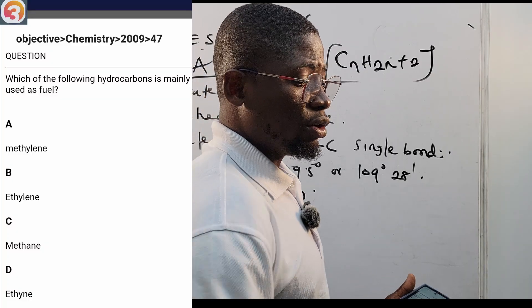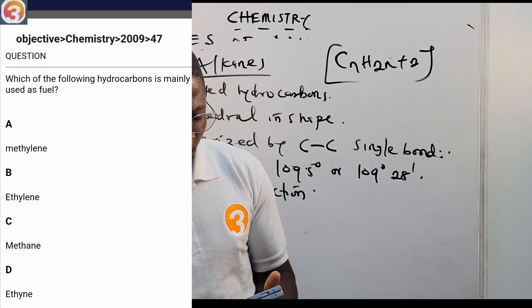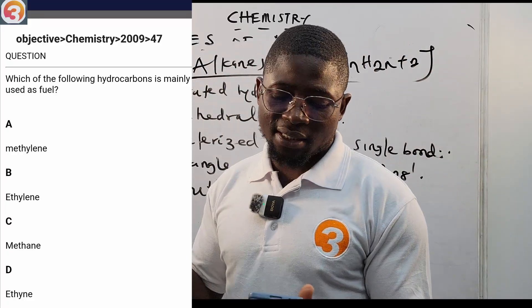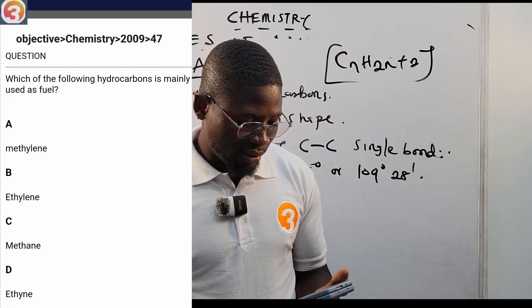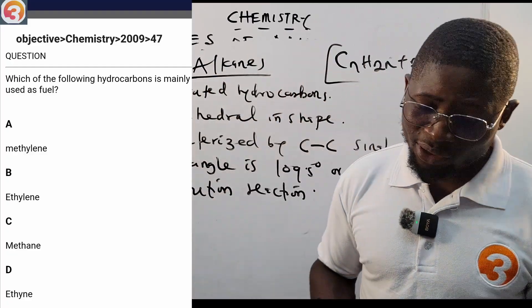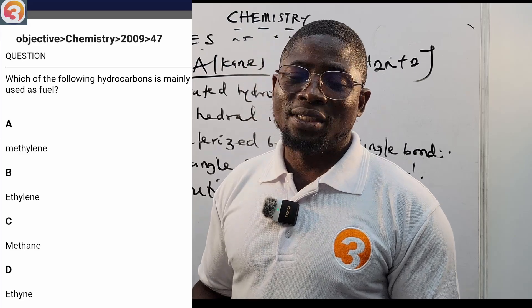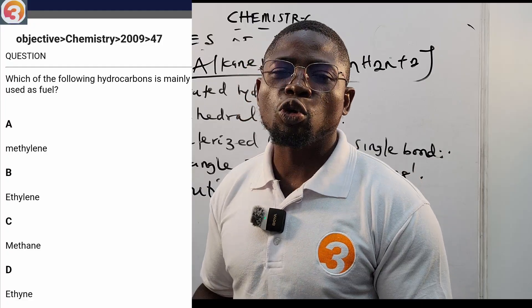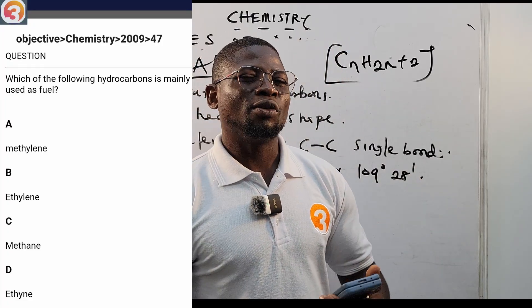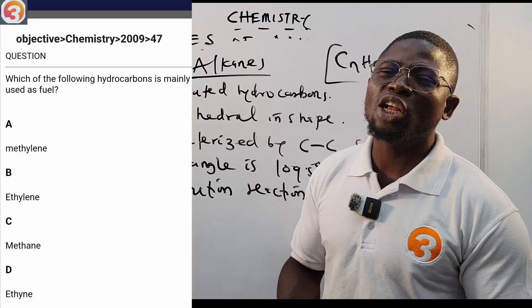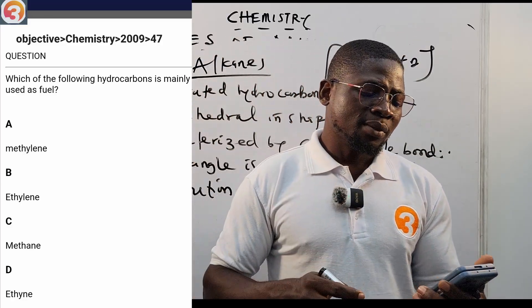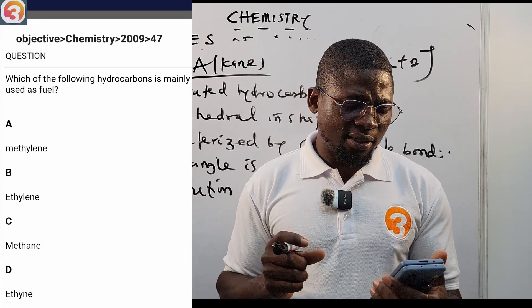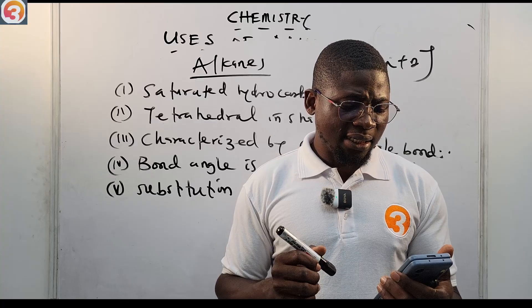2009 question number 47 asks: which of the following hydrocarbons is mainly used as fuel? Options: A) methylene, B) ethylene, C) methane, D) ethyne. The correct answer is methane — because methane is the principal, major, chief component of natural gas and undergoes combustion to release a lot of heat, so it is used as fuel.